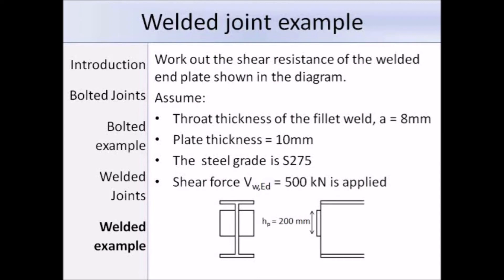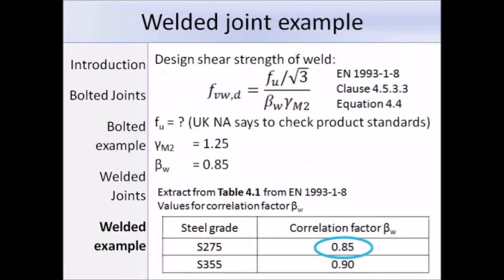In this example we need to work out the shear resistance of the welded end plate shown in the diagram. The assumptions are: the throat thickness of the fillet weld A is 8 mm, the plate thickness is 10 mm, the steel grade is S275, and the design shear force VWED is taken as 500 kN. The first step is to work out the design shear strength of the weld using expression 4.4, which requires FU and beta W.